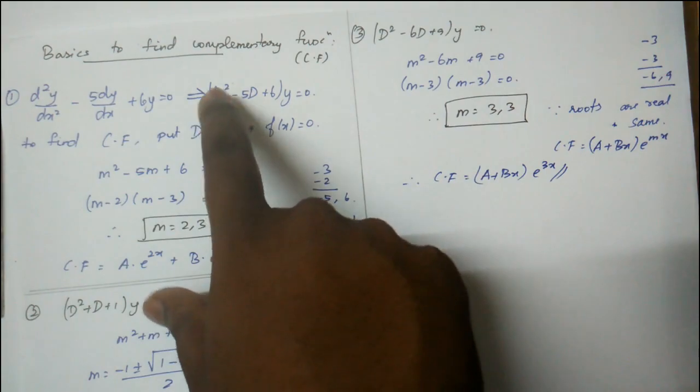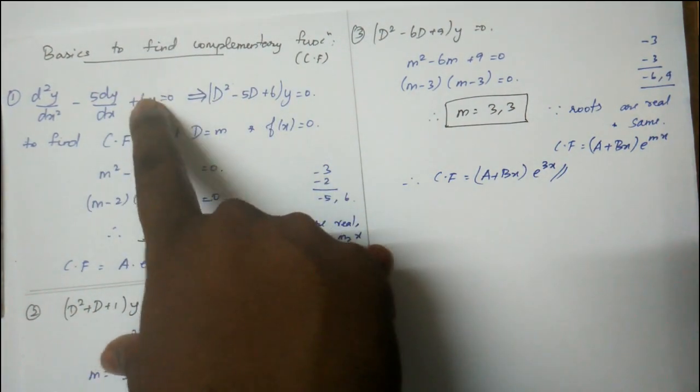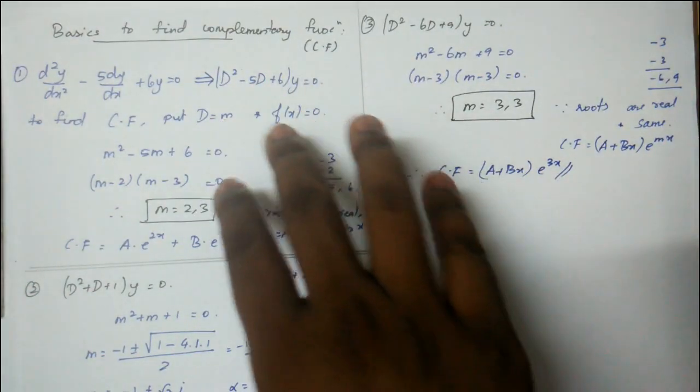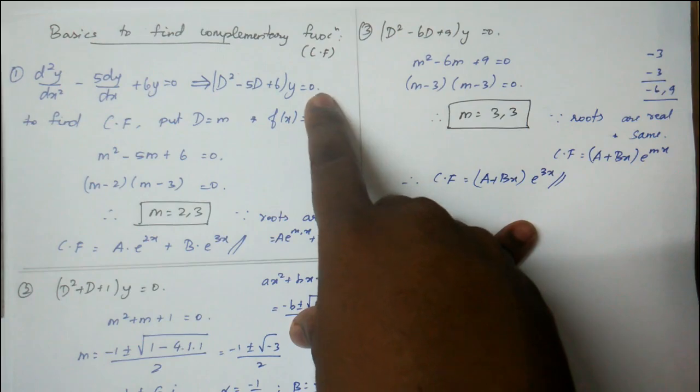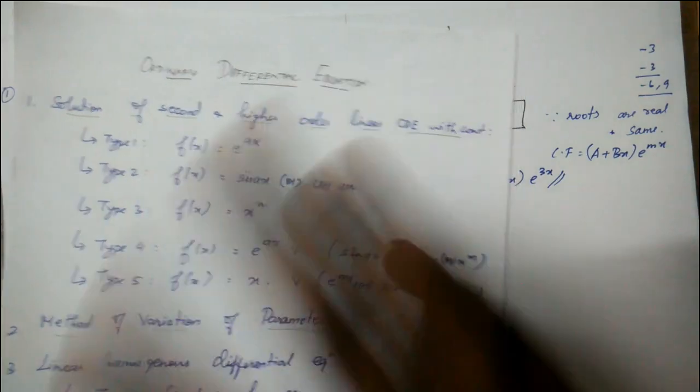You have to convert d²y/dx² to the proper form with some constant on the right-hand side. Either the right-hand side is zero or some function. This is the basic setup for finding complementary functions.